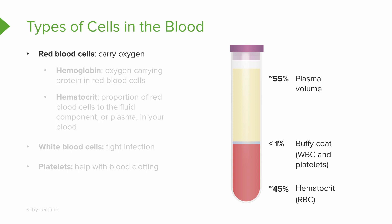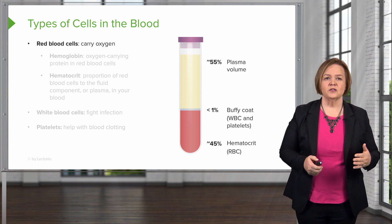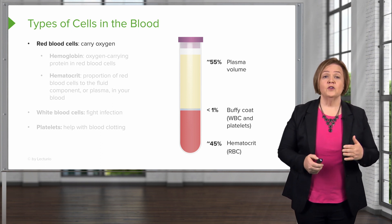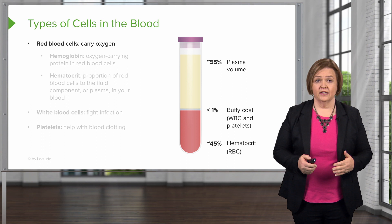Looking at the packed red blood cells — when you hang a unit of blood for a patient, that's what you're hanging, because we want to get that oxygen-carrying component in the red blood cells besides adding all that extra volume. Now let's go back and take a look at the different types of cells. We've got red cells, white cells, and platelets.